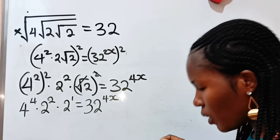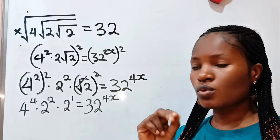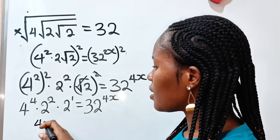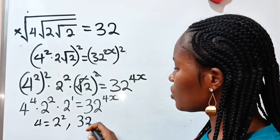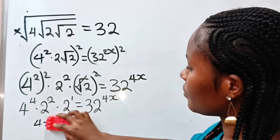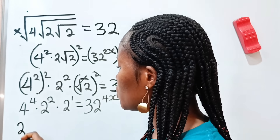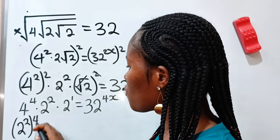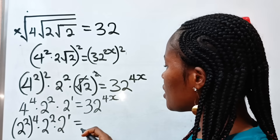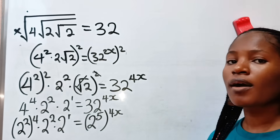Now, when you look closely, you will notice that we can change each of them to be in the same base — to base 2. So let's go ahead and do that. Now 4 is equal to 2 to the power of 2, and 32 is equal to 2 to the power of 5. So we are going to replace this with 2 to the power of 2, raised to the power of 4, multiplied by 2 to the power of 2, multiplied by 2 to the power of 1, is equal to 2 to the power of 5, raised to the power of 4x.